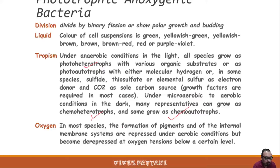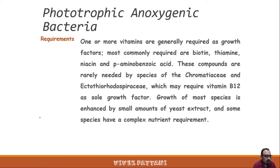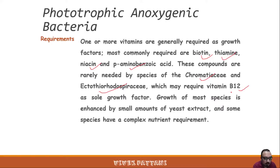In most species, the formation of pigment and internal membrane systems is repressed under aerobic conditions but becomes de-repressed at oxygen tensions below a certain level. For growth, various vitamins are required: most commonly biotin, thiamine, niacin, and para-aminobenzoic acid. Species from Chromatiaceae and Ectothiorhodospiraceae may require vitamin B12 as a growth factor.